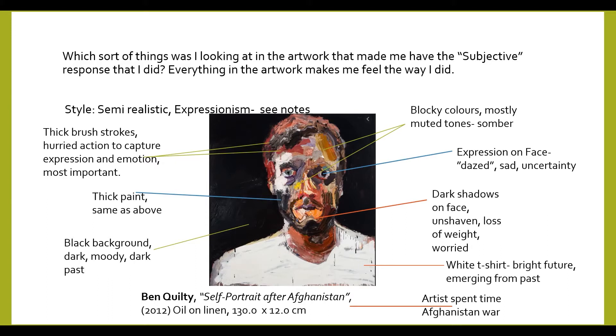The background is black, dark, moody — does this mean he's come from a dark past or a dark part of his life? The colours are applied in blocks and are mostly muted and sombre tones. The expression on the artist's face — and we can't forget this is his self-portrait — is dazed, sad, almost uncertain. His face is covered in dark shadows and he looks unshaven, thin, and like he's lost weight, but he's wearing a white t-shirt, almost like a bright self emerging from a dark past. And finally, the title says Self Portrait After Afghanistan — the artist spent time there during the Afghanistan war.